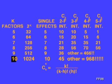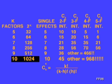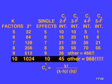For ten factors, there are 1,024 treatment combinations. There are ten degrees of freedom for single effects, 45 degrees of freedom for the two-factor interactions, and 968 degrees of freedom for all the rest.